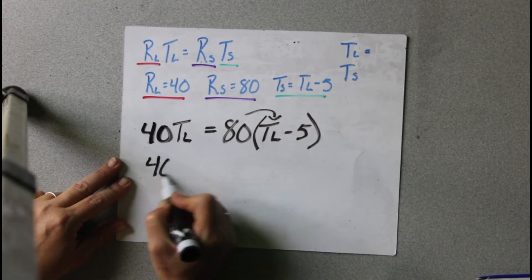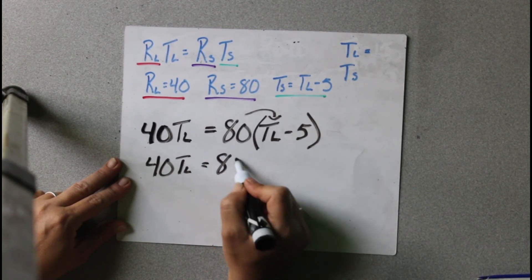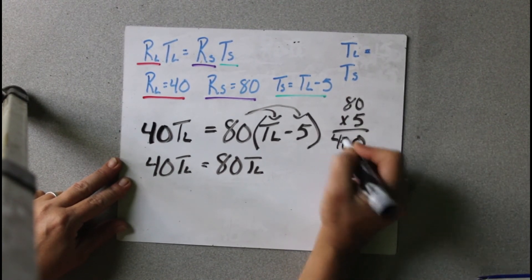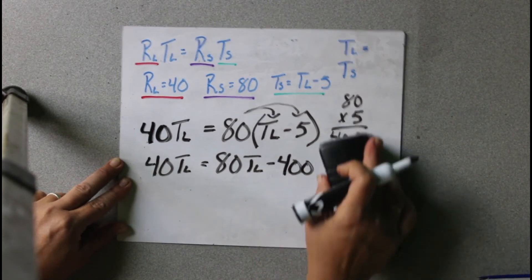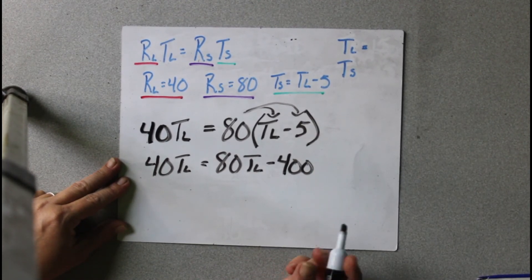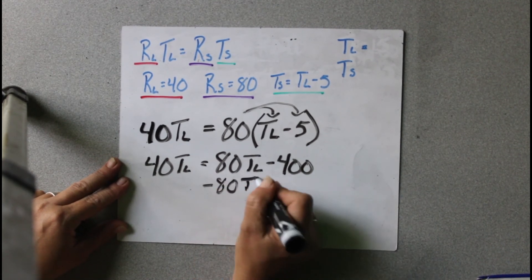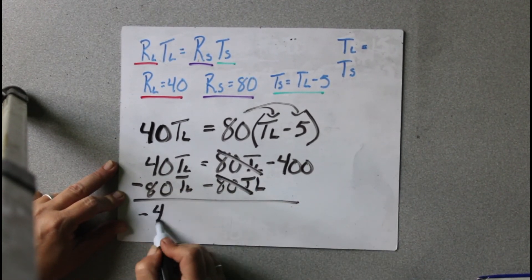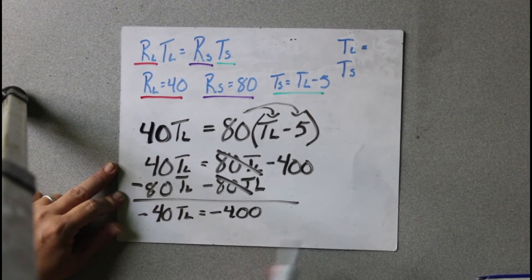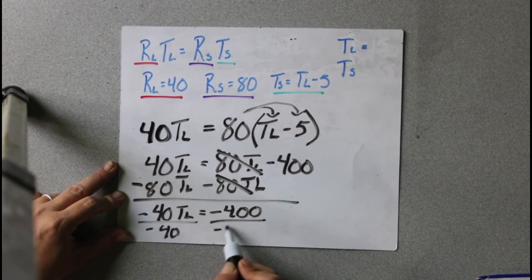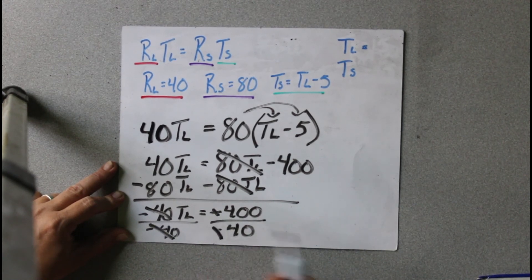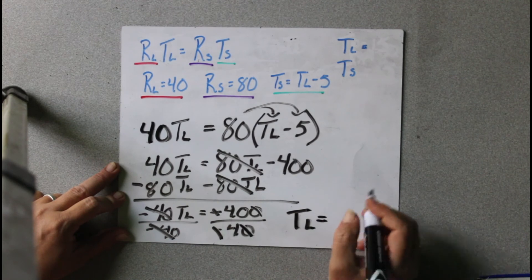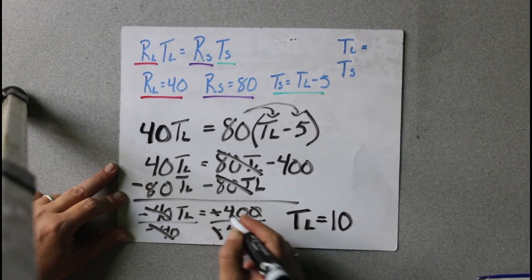Now we need to distribute. So 40TL equals 80TL. And then we've got 80 times 5: 5 times 0 is 0, 8 times 5 is 40, so minus 400. Now I'm going to get these on the same side: minus 80TL and minus 80TL. Those cancel, and we get negative 40TL equals negative 400. Now we just divide by negative 40. These negatives cancel each other out, and we get 10. So TL equals 10.